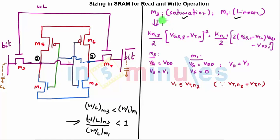So in saturation: kn3 by 2, because M3 is in saturation, Vgs3 minus Vtn the whole square. This is in linear: kn1 by 2, twice Vgs minus Vtn into Vds minus Vds1 the whole square. Now we know that the voltage at node 1 is 0 but it should be less than or equal to the threshold voltage of transistor M2.